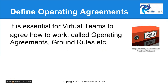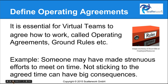Operating agreements, ground rules, whatever you like to call them, are essential so that people operate in more or less the same way. For example, somebody may have made strenuous effort to get to a meeting on time — maybe they had to put a baby to bed or change a flight. So not sticking to the agreed time can have big consequences, so it's better to have rules.